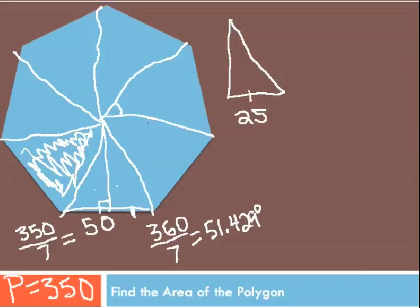And since the whole central angle is 51.429, the angle on the right triangle is half that, which is about 25.714 degrees.